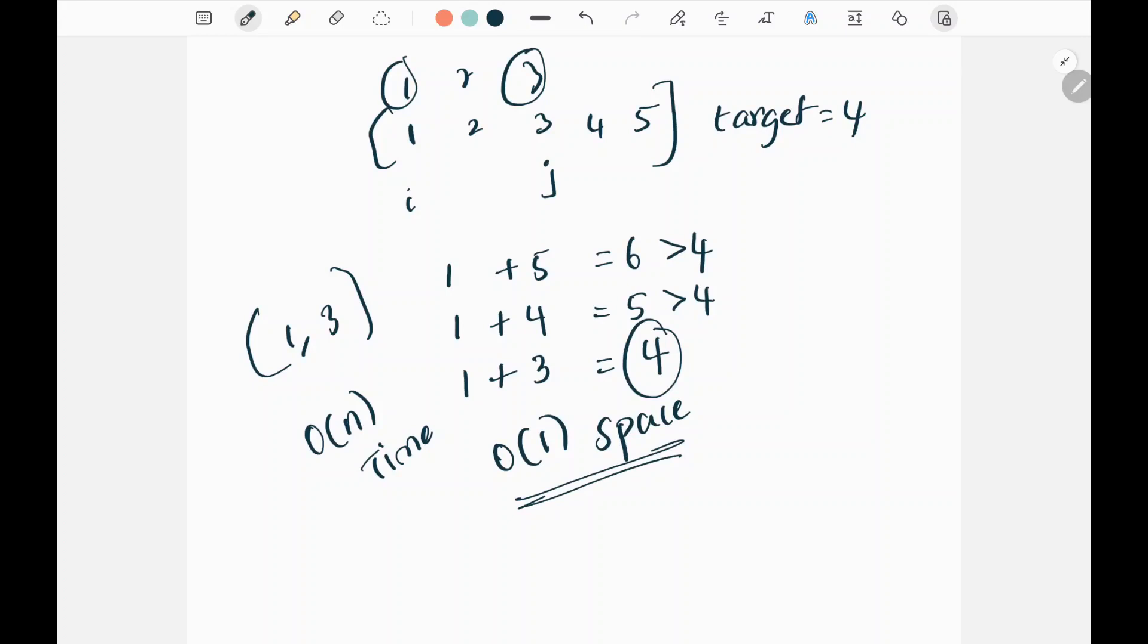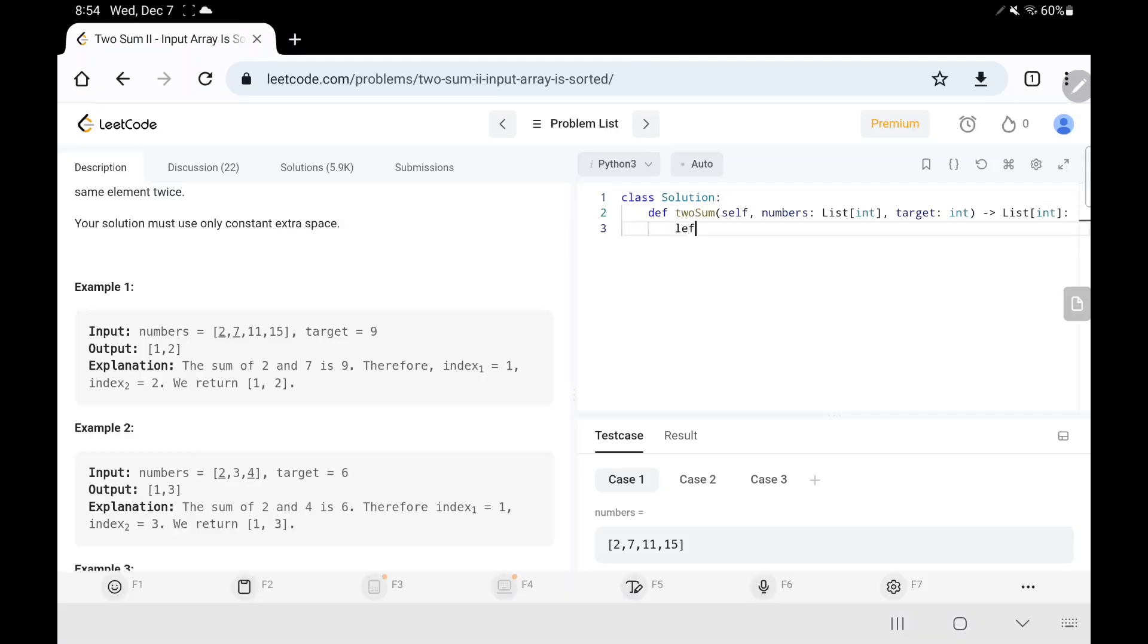Now we will see the code. First we are assigning the variables left and right pointers. Left is equal to zero, right is equal to length of the array. We are going to take the last index of the array.